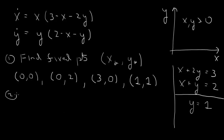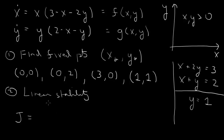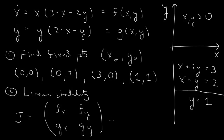The second step is to determine the linear stability of these fixed points. We need to find the Jacobian matrix. If the first equation is f(x, y) and the second is g(x, y), the Jacobian matrix consists of the partial of f with respect to x, partial of f with respect to y, partial of g with respect to x, and partial of g with respect to y.